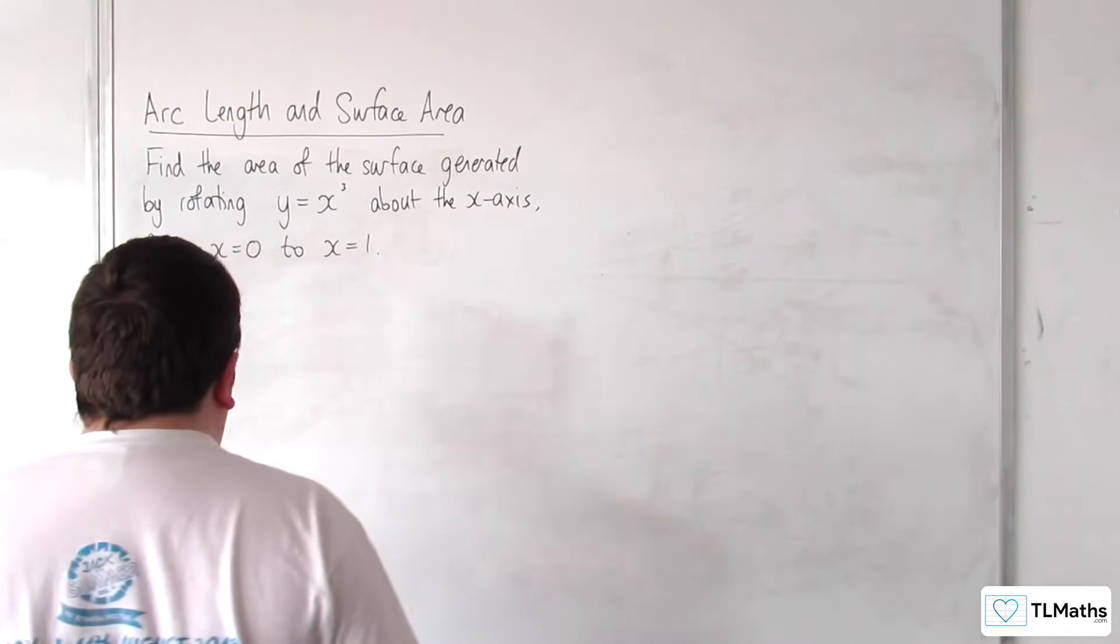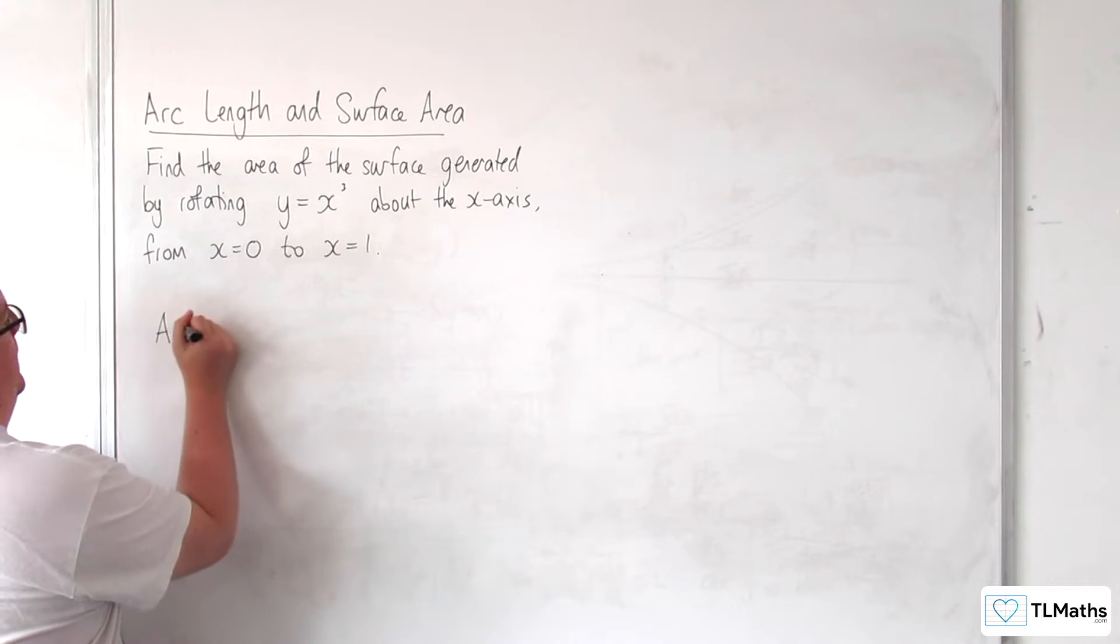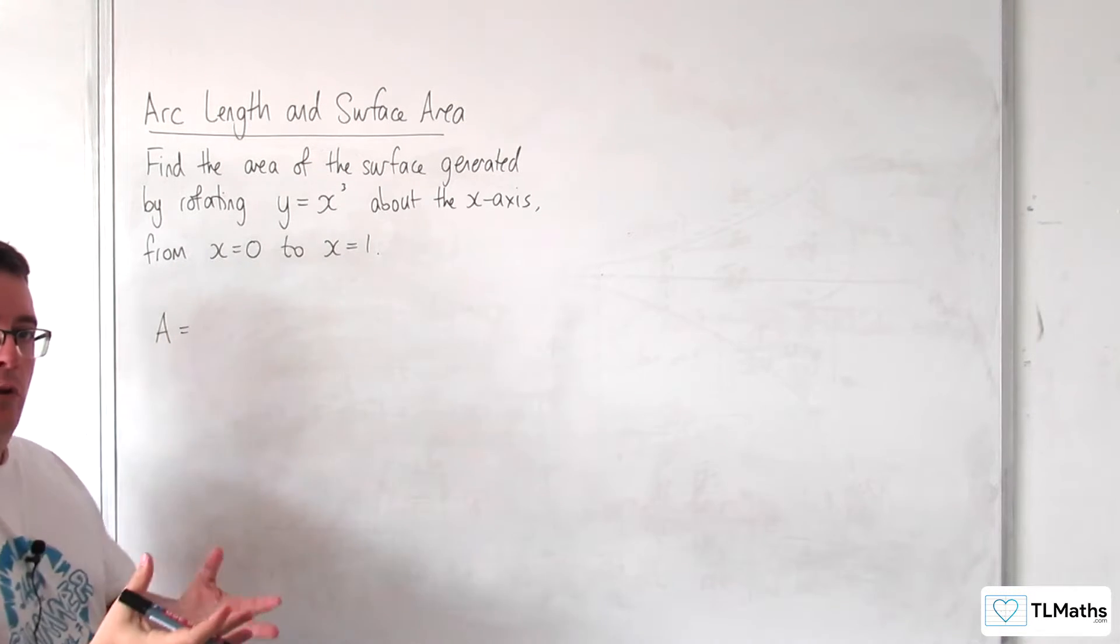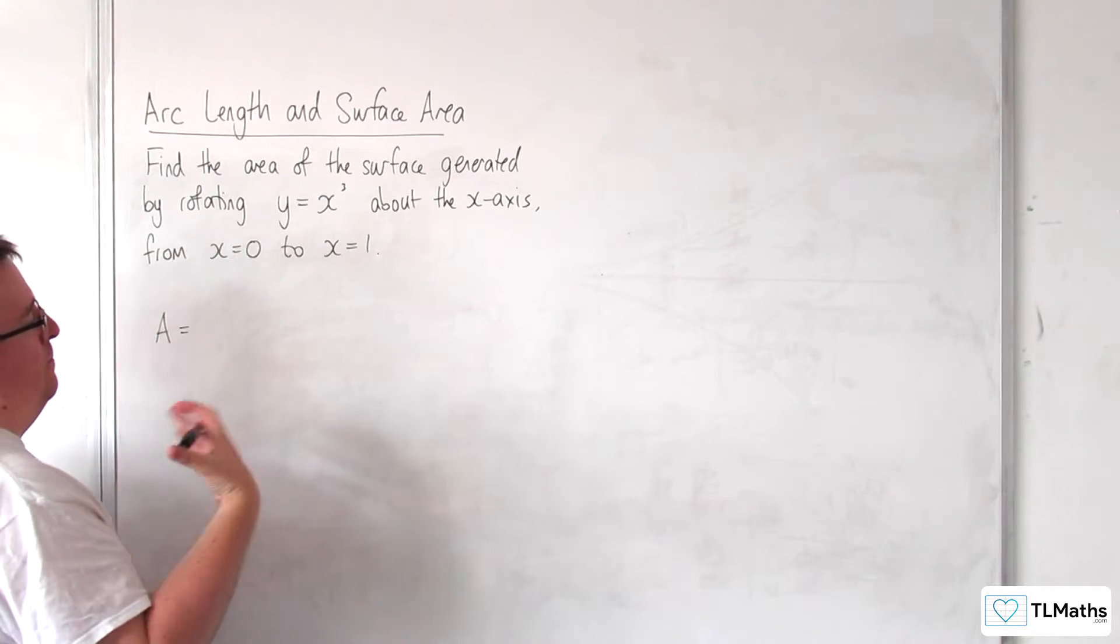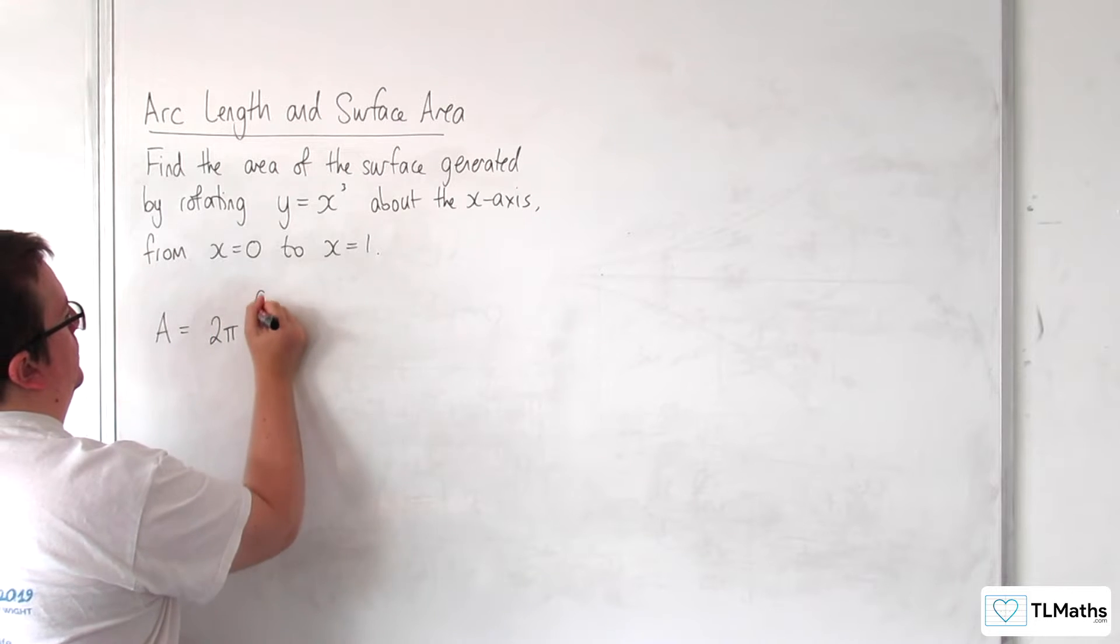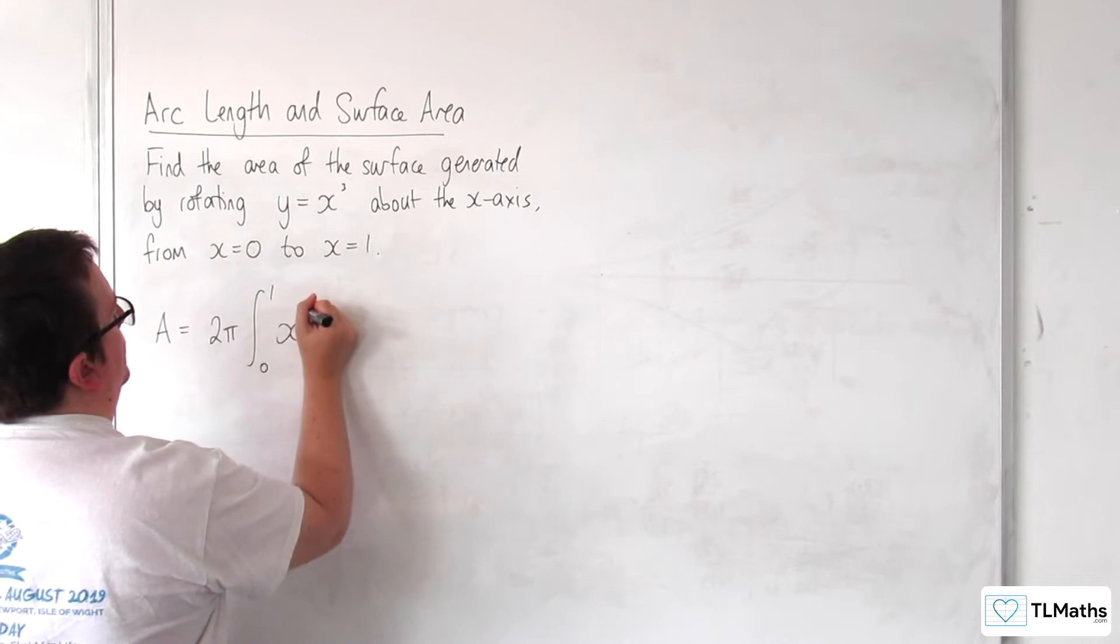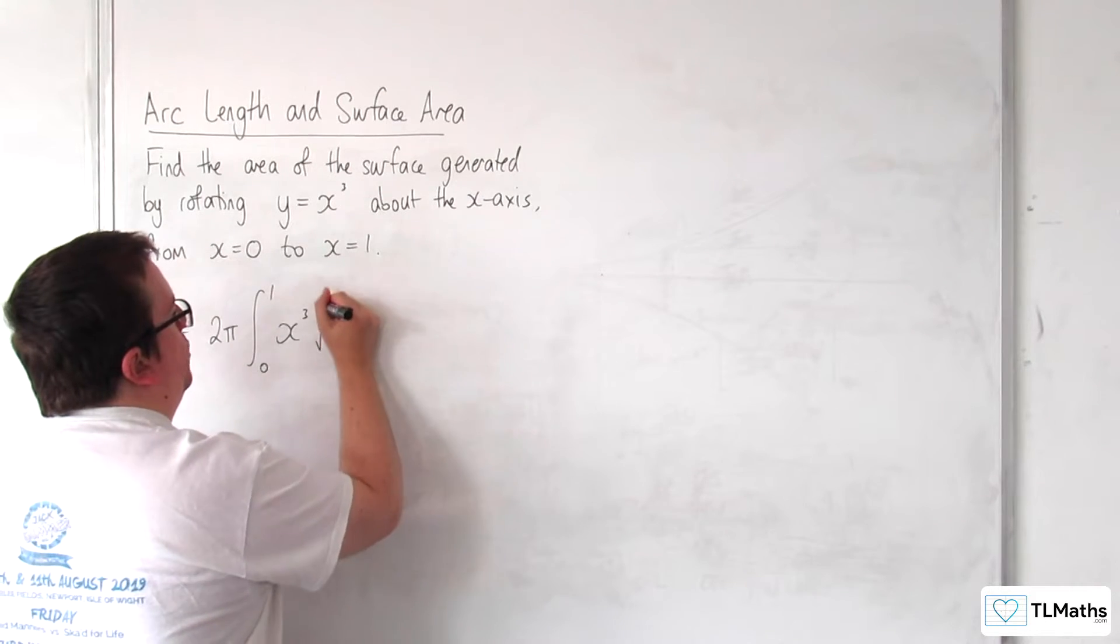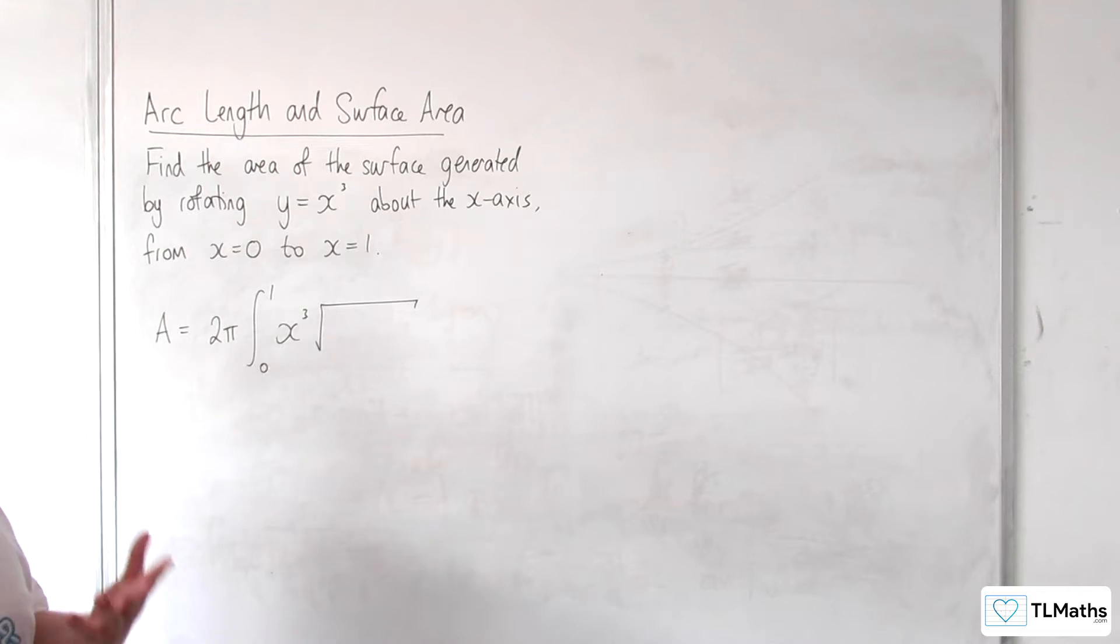Okay, so first things first, our area is going to be equal to the integral of 2 pi y to start off with. Now I'm going to bring the 2 pi outside of the integral between 0 and 1 of y, which is x cubed, times by the square root of 1 plus dy by dx squared.